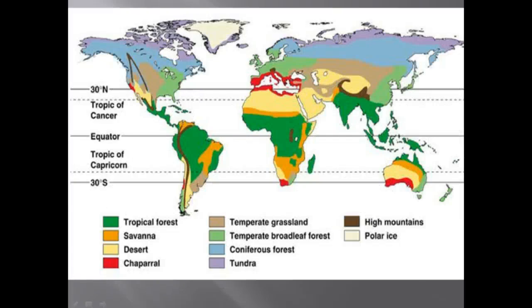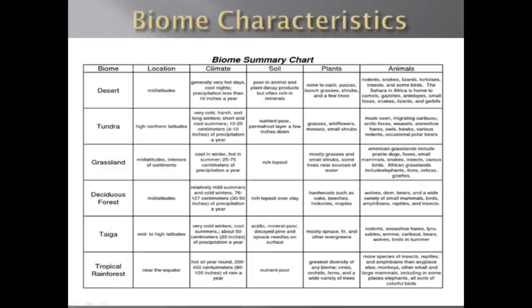You should already know the major biomes of the world. At a minimum, you should know the names, locations, and climate of each biome: the desert, tundra, grassland, deciduous taiga, and the tropical rainforest.